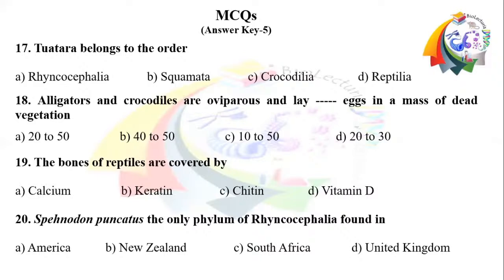Answers: Question 17 right option A — tuatara belongs to the order Rhynchocephalia. Question 18 right option A — alligators and crocodiles are oviparous and lay 20 to 50 eggs in a mass of dead vegetation. Question 19 right option B — bones of reptiles are covered by keratin. Question 20 right option B — Sphenodon punctatus, the only member of Rhynchocephalia, is found in New Zealand.